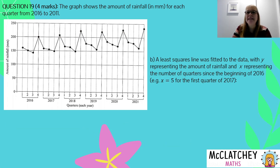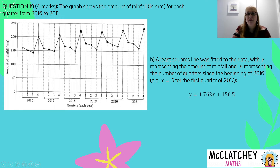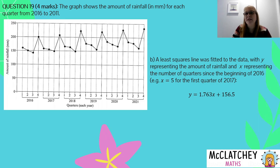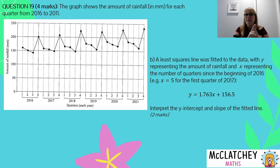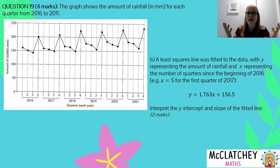Part B. A least squares line was fitted to the data, with Y representing the amount of rainfall and X representing the number of quarters since the beginning of 2016. For example, X equals 5 was the first quarter of 2017 — that's quarters 1, 2, 3, 4, and then X=5 is this next one. The question gives us the least squares line, so we don't need to find it ourselves. It is Y equals 1.763X plus 156.5. We are asked to interpret the Y-intercept and the slope of the fitted line — the Y-intercept is one mark and the slope is the other.